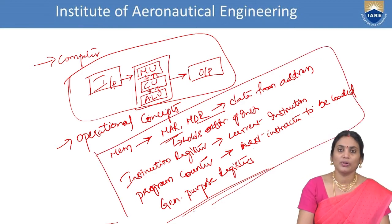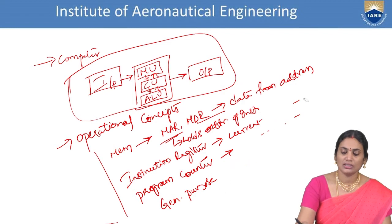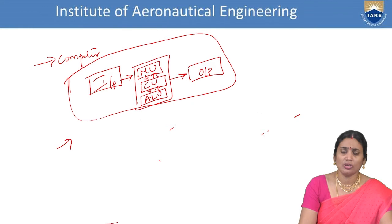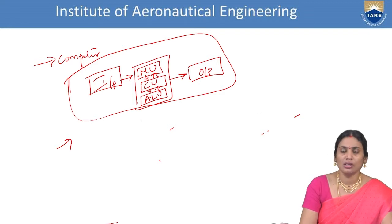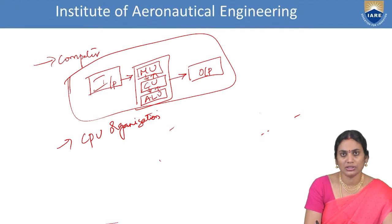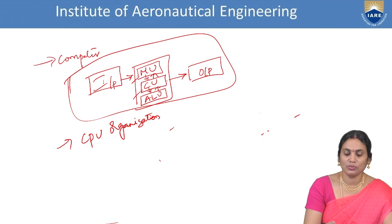These are the basic components involved in operational concepts: MAR, MDR, Instruction Register, Program Counter, and General Purpose Registers. Now, in CPU organization: data is controlled and coordinated by the control unit, arithmetic operations are performed in the ALU, and storage structures are maintained in the memory unit. For synchronization between these bi-directional operations, we need a special interface called the System Bus.